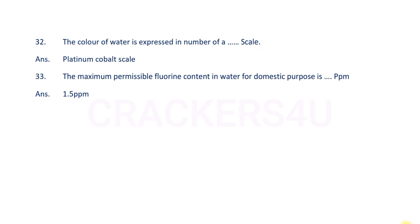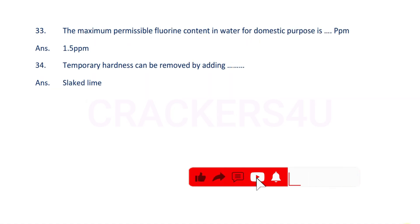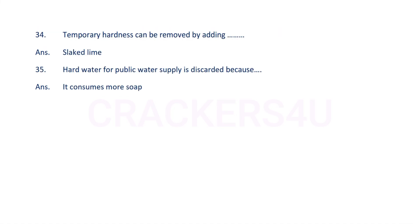The maximum permissible fluorine content in water for domestic purpose is 1.5 ppm. Temporary hardness can be removed by adding slaked lime.